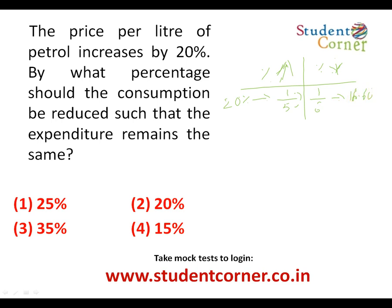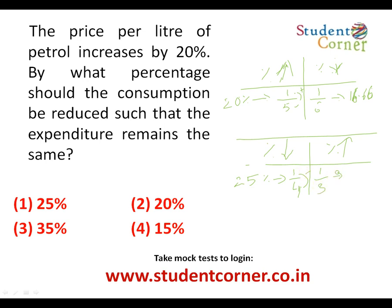Note: for height, weight, or marks, the same percentage increase means the same decrease. But for price-consumption type problems it's different. Similarly, if percentage decrease is given — for example, the cost of rice decreases by 25% (= 1/4) — the percentage increase in usage is numerator over (denominator − numerator) = 1/3 = 33.33%.